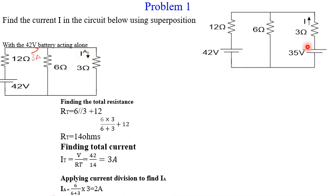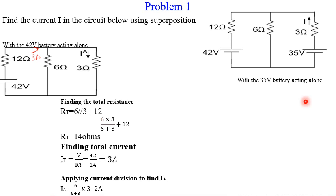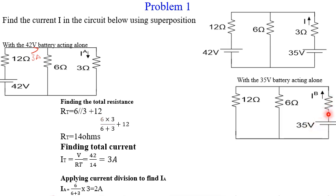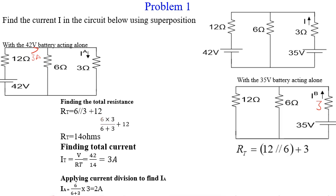Now we take the 35-volt source acting alone. We draw the circuit and note that this voltage source is close to the current we want to find and goes in the same direction. Finding total resistance: 12 ohms and 6 ohms are in parallel, and their combination is in series with the 3-ohm resistor, giving a total resistance of 7 ohms. The total current is 35 divided by 7, which equals 5 amps.